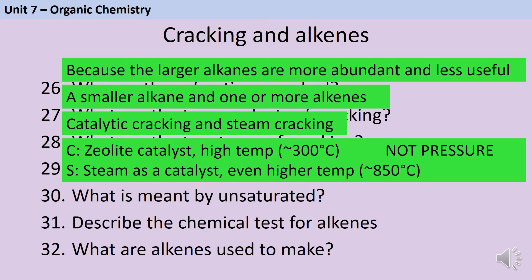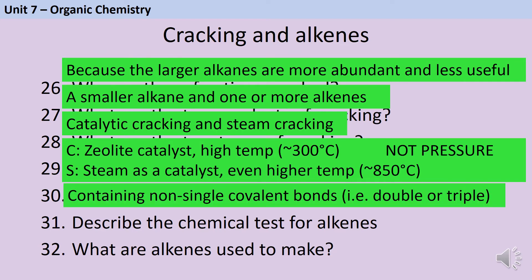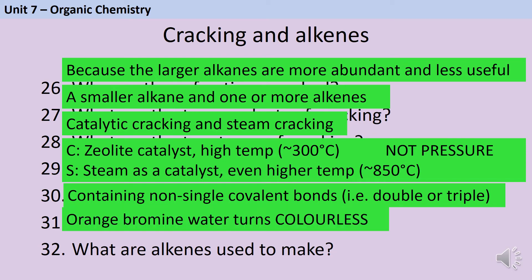Unsaturated molecules have covalent bonds that are not single covalent bonds. The only named examples at GCSE are those with double bonds, but molecules with triple bonds would also be considered unsaturated. To test for alkenes — or any unsaturated bond — you use orange bromine water, which will turn colourless. It's important to say colourless, not clear. Bromine water is already transparent, but when it reacts it becomes colourless.